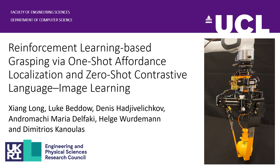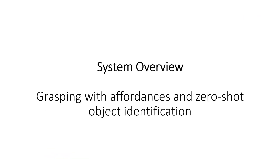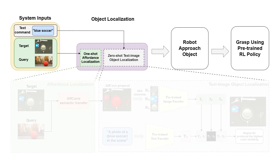Reinforcement learning based grasping via one-shot affordance localization and zero-shot contrastive language image learning. First, an overview of the system pipeline to accomplish grasping. The system takes two key inputs: a brief text description of the target object, as well as a labeled query image of a similar object.